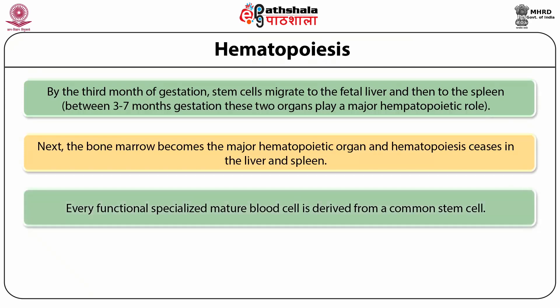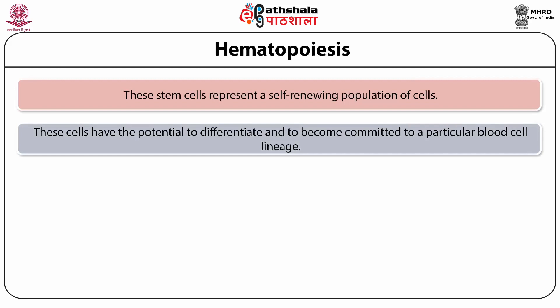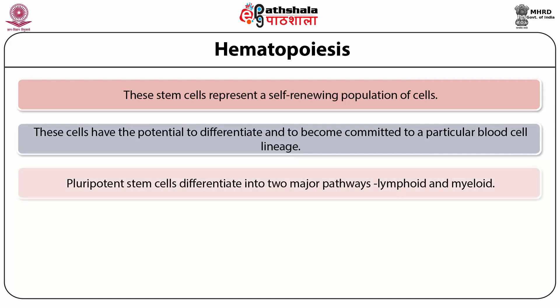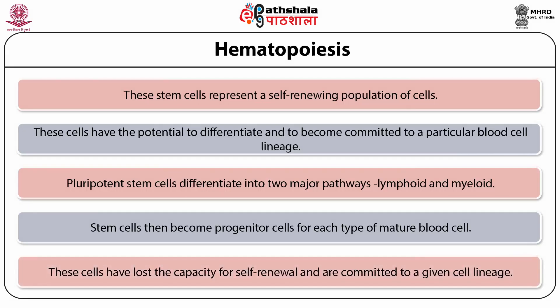Every functional and specialized mature blood cell is derived from a common stem cell. These stem cells are therefore pluripotent and represent a self-renewing population of cells. They have the potential to differentiate and become committed to a particular blood cell lineage. Pluripotent stem cells differentiate into two major pathways: lymphoid and myeloid. Stem cells then become progenitor cells for each type of mature blood cell, having lost the capacity for self-renewal and being committed to a given cell lineage.